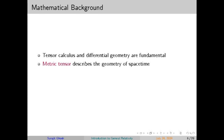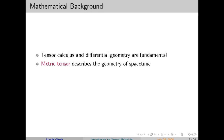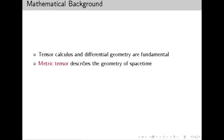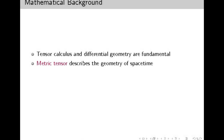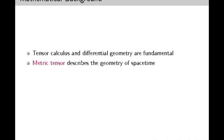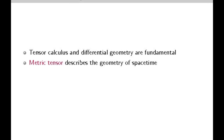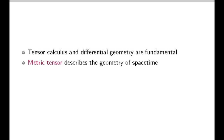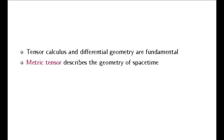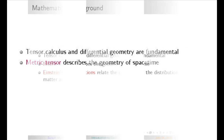Another fascinating prediction is the existence of gravitational waves — ripples in space-time caused by accelerating masses, such as merging black holes or neutron stars. The direct detection of gravitational waves by LIGO in 2015 was a monumental achievement, confirming a key aspect of Einstein's theory and opening up a new way of observing the universe. Gravitational waves allow us to hear events that are invisible to traditional telescopes, such as the collision of black holes, giving us unprecedented insights into the universe's most energetic processes.